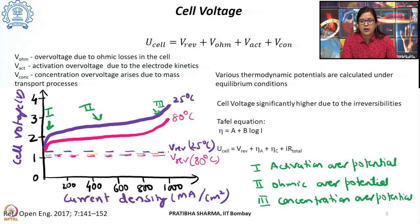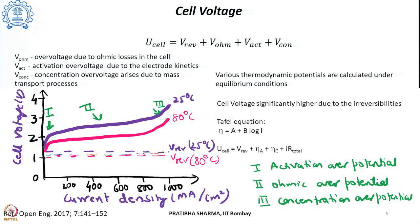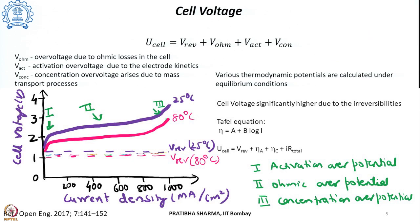In these terms, the cell voltage equals the reversible cell voltage plus the activation overvoltage plus the concentration overvoltage, plus the current flowing through the cell times the total resistance arising from the various components of the cell. This is how the overall total cell voltage is related to the various overvoltages and the thermodynamic reversible voltage.